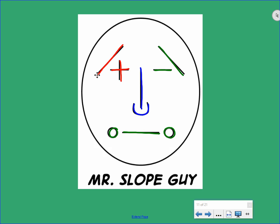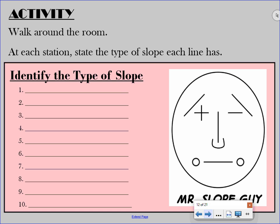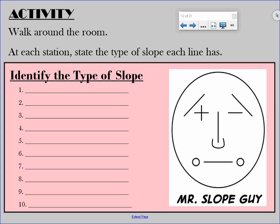All right, so what you guys are going to do right now is you're going to walk around the room. And at each station, you're going to state the type of slope that each line has. Does it have a positive slope? Does it have a negative slope? Does it have an undefined slope? Or does it have a zero slope? You'll get a pink sheet that looks very much like this sheet on the board. And at station number one, you're going to tell me, is it a positive slope? Is it a negative slope? Undefined or zero? And you'll continue two, three, all the way through ten.